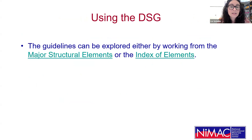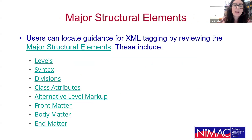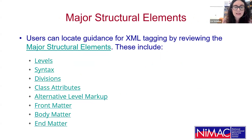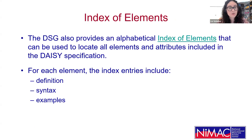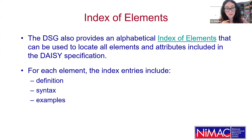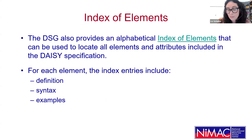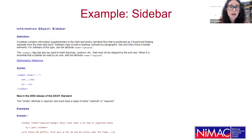You can utilize the guidelines either by working from the major structural elements or from the index of elements. You can locate guidance for XML tagging by reviewing major structural elements like levels, syntax, class attributes, and key pieces of your book — your front matter, body matter, and end matter. The DAISY structure guidelines also provides an alphabetical index of elements, which can be used to locate all elements and attributes included in the DAISY specification. For each element, the index entry includes a definition, the syntax, as well as some examples. I'll show you an example on the screen of the entry for sidebar.